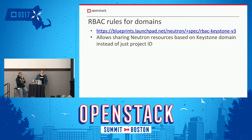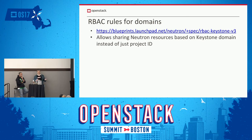RBAC rules for domains: right now we have an RBAC API inside of Neutron that allows you to share networks with other tenants or projects, and allow them to access them as external networks or shared networks. It can also be used to share QoS rules between projects. This is going to be expanded to also support Keystone domains, so you'll be able to share networks or QoS objects with entire Keystone domains.